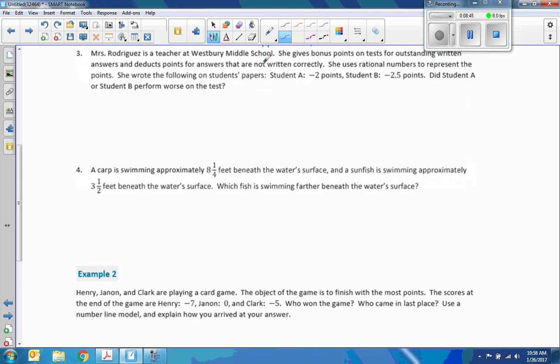Mrs. Rodriguez is a teacher at Westbury Middle School. She gives bonus points on tests for outstanding written answers, and deducts points for answers that are not written correctly. She uses rational numbers to represent the points. She wrote the following on a student's paper. Student A, negative two points. Student B, negative 2.5 points. Did student A or student B perform worse on the test? So if I draw a number line, we want to know what's further from zero on a negative side is smaller. So here's negative 1, negative 1.5, negative 2, negative 2.5. So we have a student here at negative 2, and we have a student who's got a negative 2.5, Student A and student B. Here is zero, who's further? Student B is. And they're negative, so that's less. So negative 2.5 is less than negative 2. Student B performed worse.